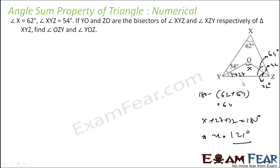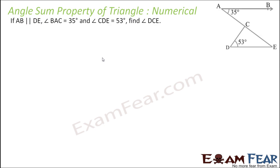So I have found x, that is angle YOZ equals 121 degrees. And angle OZY is 32 degrees. Very easy — just apply triangle angle sum property.